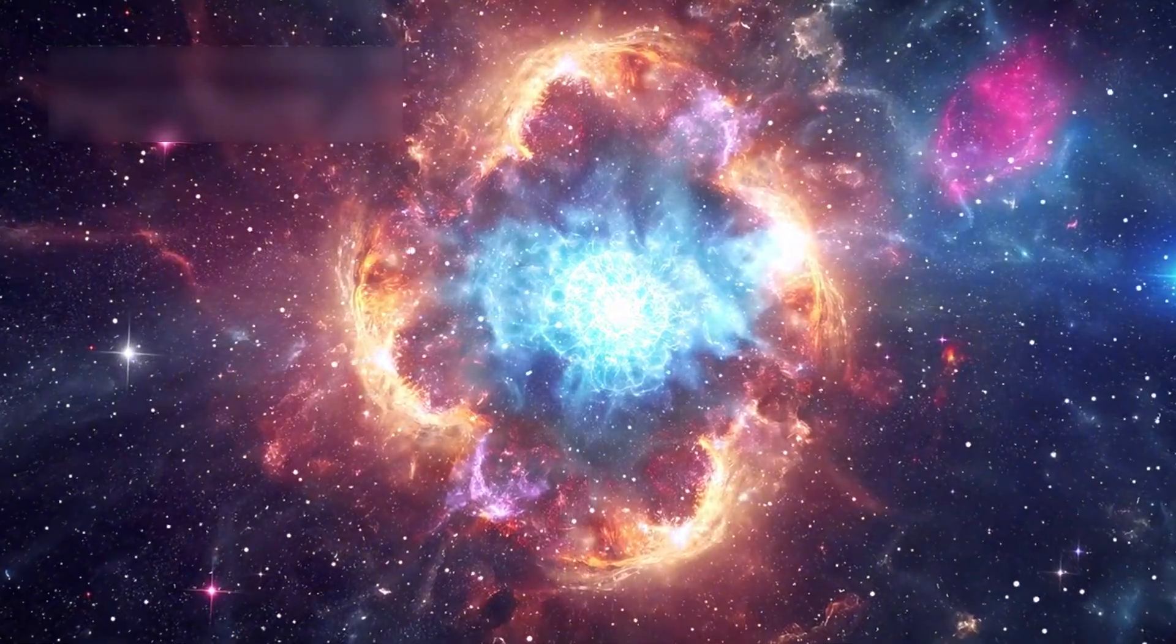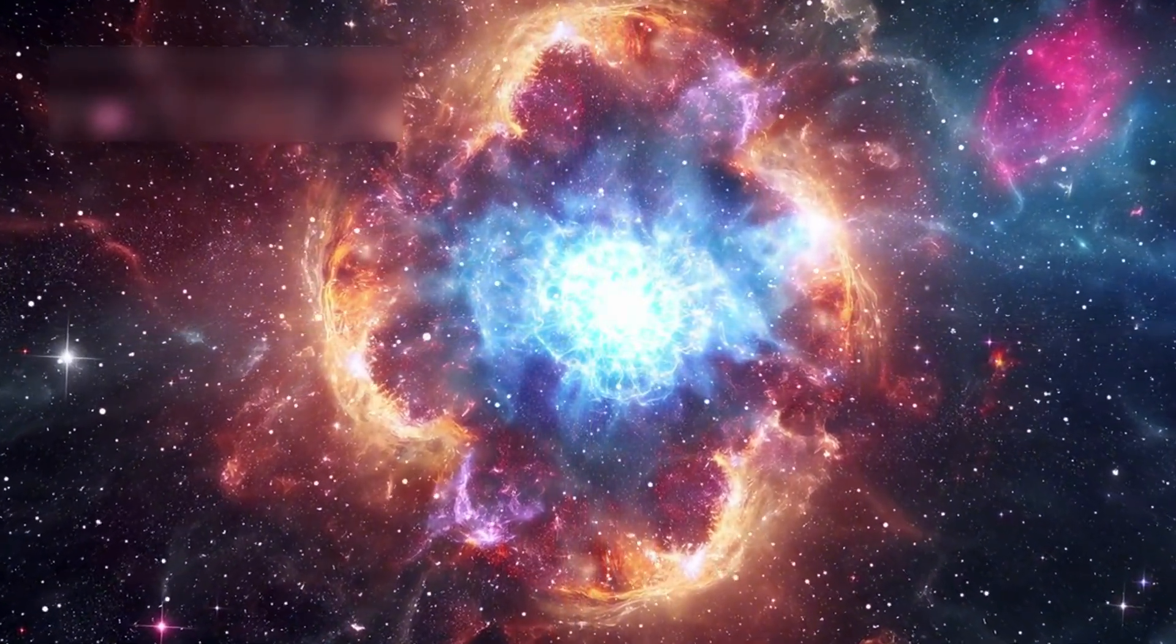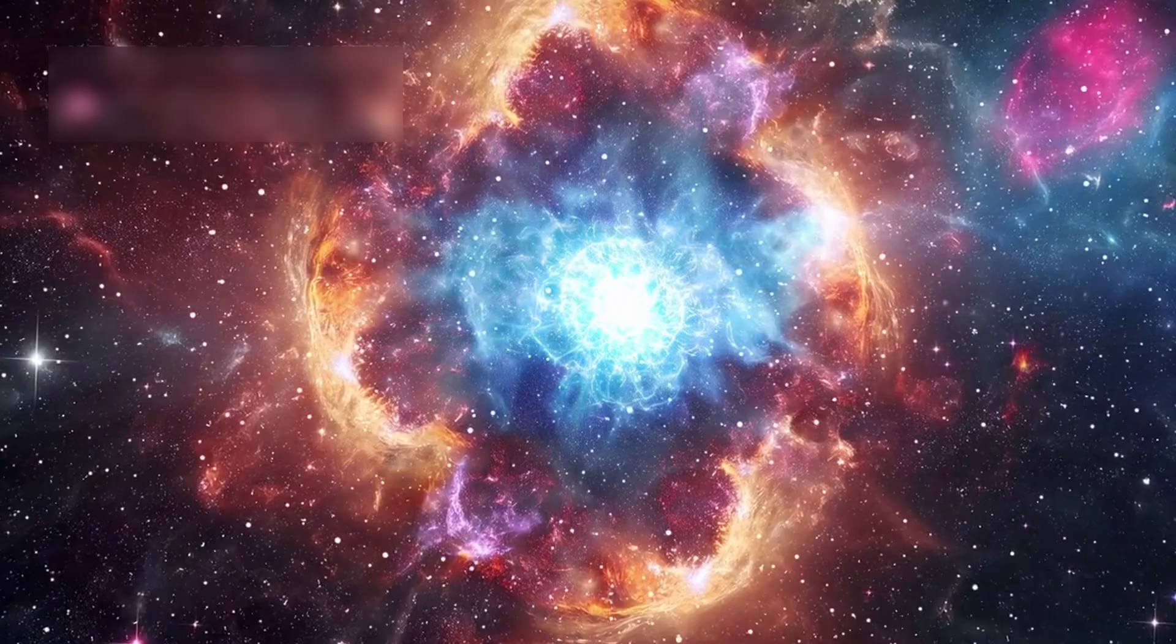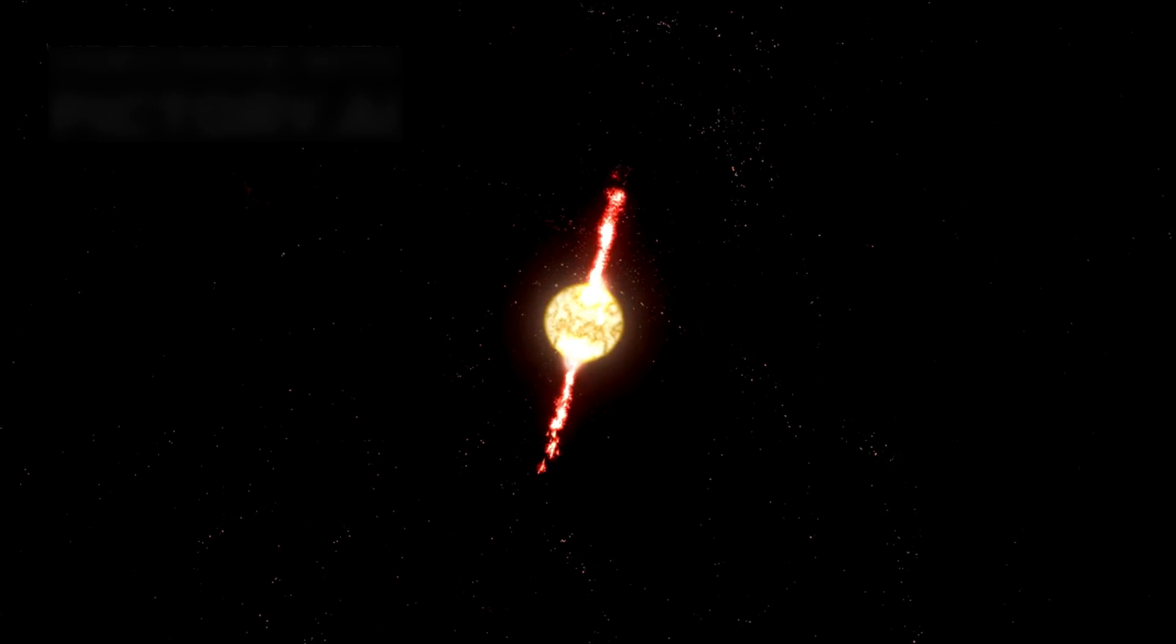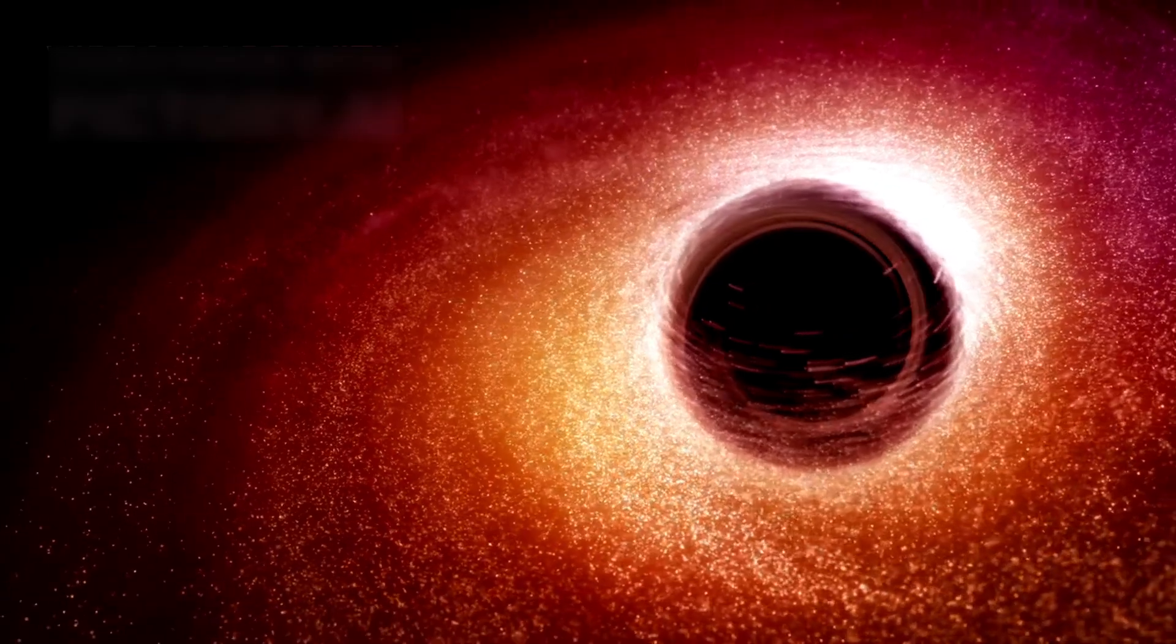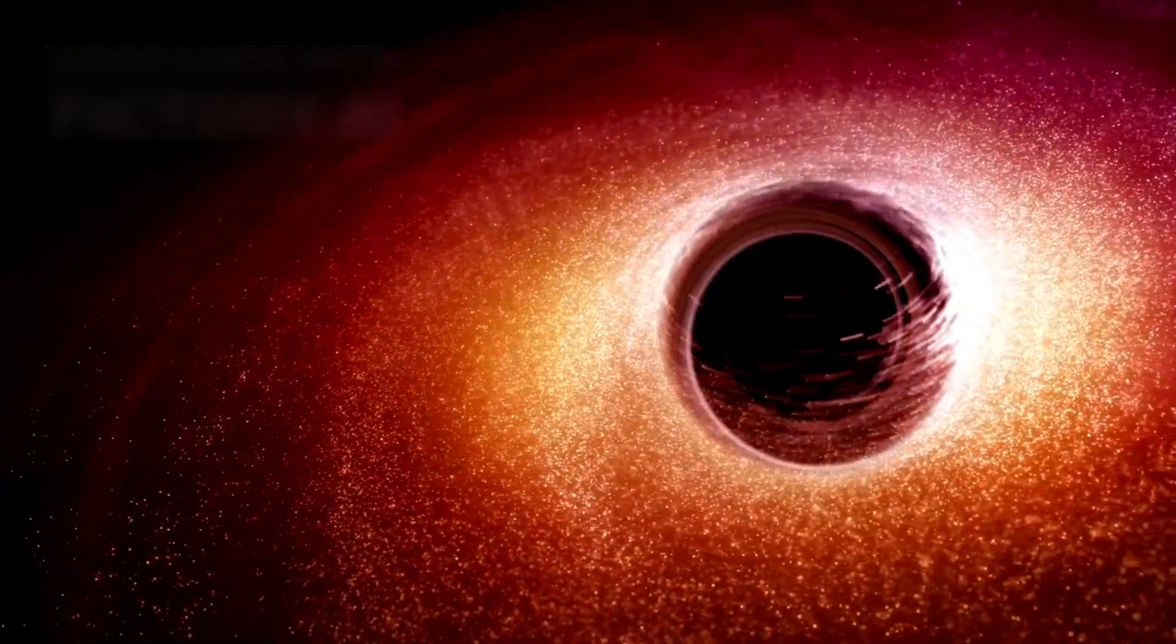When Betelgeuse does explode, the core collapse could create either a neutron star or a black hole, depending on the remaining mass. The neutron star is incredibly dense. Just a teaspoon of it would weigh billions of tons. A black hole, however, has gravity so strong that even light can't escape.